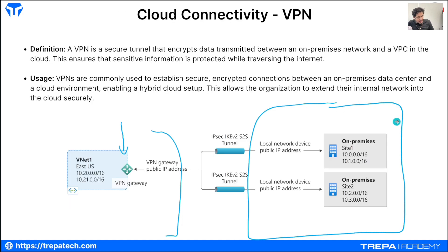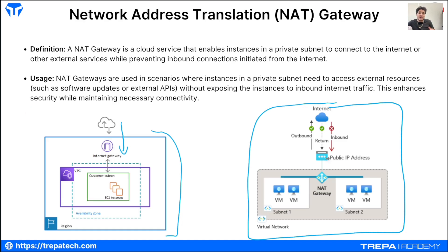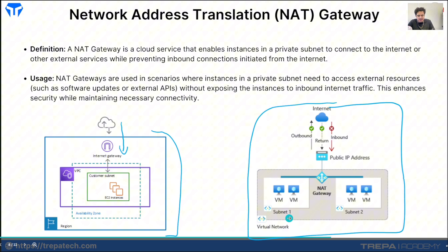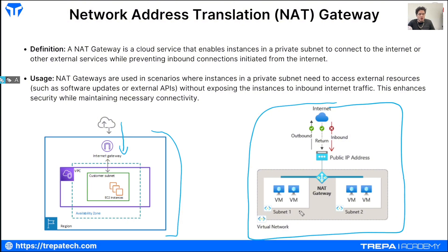A NAT gateway is similar to an internet gateway but performs traditional network address translation, like you'd see on-prem. Your resources behind a VPC or VNet have private RFC 1918 addresses, and the NAT gateway — which has a public IP — performs the translations for you. This is a cloud resource you deploy and control from your cloud console.